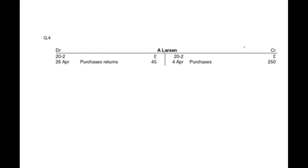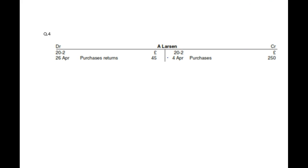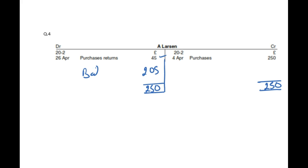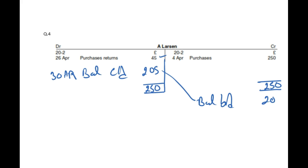The final example is Larson — it looks like a trade payable. We want to do balance c/d and b/d and see which side is bigger. Clearly the credit side is bigger at 250. Write the total as 250 on both sides. Take away 45, which leaves 205. That is your balance c/d on the last date, 30th of April. That becomes your balance b/d of 205 on the other side on the 1st of May. Note that balance b/d can be on either side — if it's a debit account it goes on the debit side, if it's a credit account it goes on the credit side.